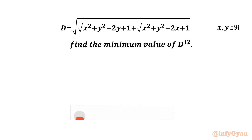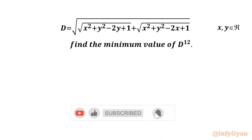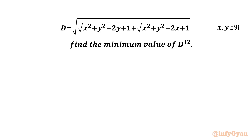Welcome to InfiGyan friends. Today in this video we have one very interesting question from Math Olympiad. We have distance d equal to square root of square root of x squared plus y squared minus 2y plus 1 plus square root of x squared plus y squared minus 2x plus 1, where x, y belongs to real numbers. We need to find the minimum value of d to the power 12.